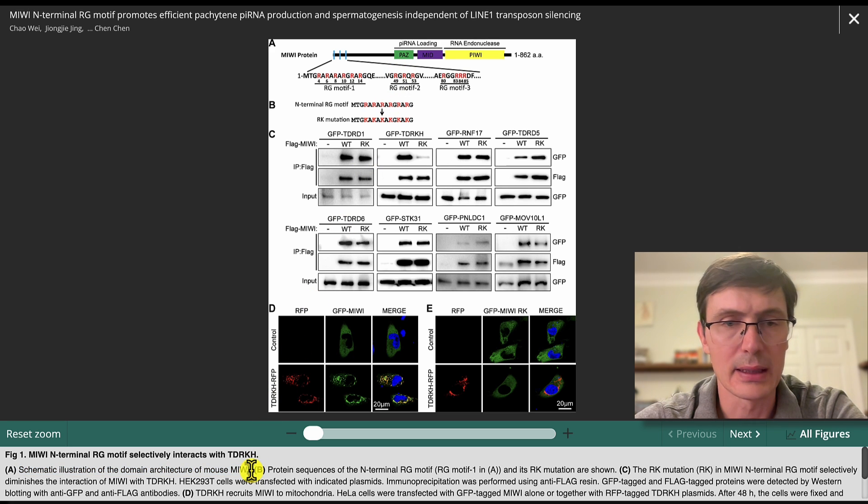Probably they cut it a little bit too short. I would have added here that the different domains of the proteins are shown on top, here like the PAS, MIUI and PIUI domain. And these N-terminal RG motifs are enlarged, and the sequence is given. So you can probably add that, but otherwise that's fine.